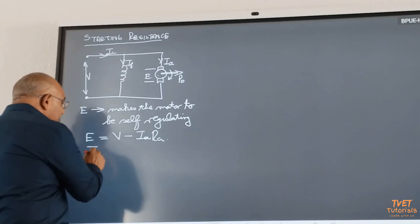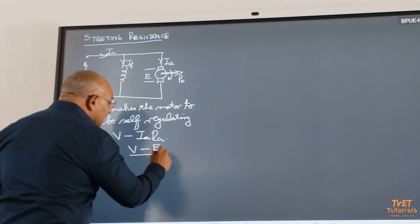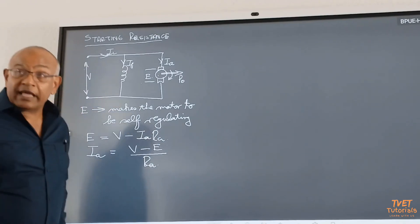Which is going to be I armature equals terminal voltage minus E divided by RA. Is that correct?